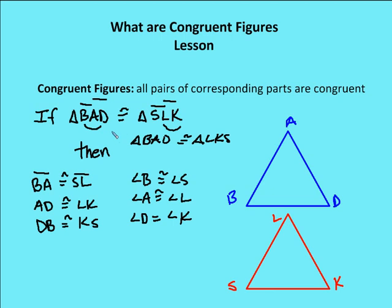Now, it also means that angle B is congruent to S, angle A is congruent to L, and angle D is congruent to K. So if I were to mark up my triangle with my tick marks, angle B is congruent to K, angle A is congruent to angle L, and angle D, and I'll make this 3 here, is congruent to angle K.